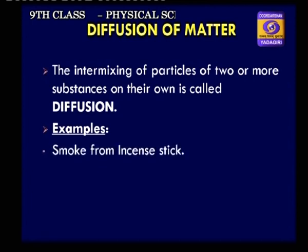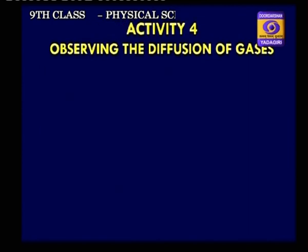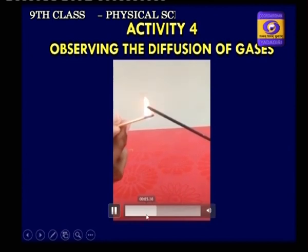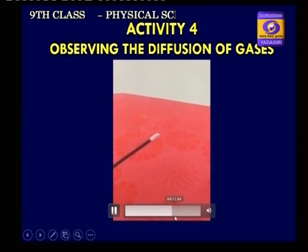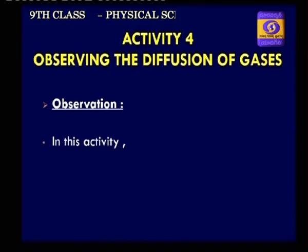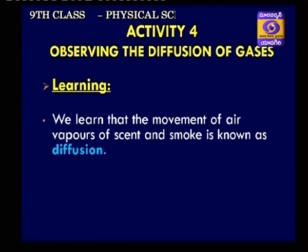Examples of diffusion: smoke from an incense stick, vapors of scent, smell of naphthalene balls, diffusion of carbon dioxide and oxygen. Let us perform an activity to observe the diffusion of gases. Light an incense stick and place it at the corner of the room. We observe that the scent in vapor form and smoke mixes with the air and moves across the room to reach our nose. The movement of air, vapors of scent and smoke is known as diffusion.